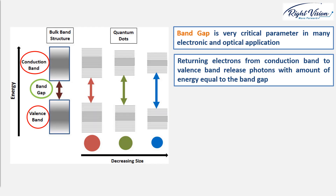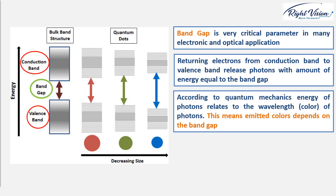And why does this matter for us? Because in quantum mechanics, energy relates to wavelength. In fact, the different colors we see are different packets of photons with different wavelengths — or different energies — reflected from the surface of materials.